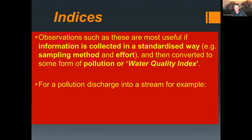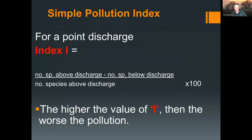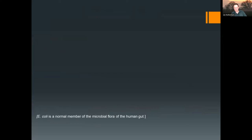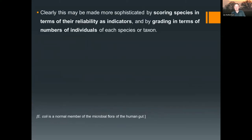For a point discharge of pollution into a stream — such as a sewage input — the index I could be: number of species above the discharge minus the number below, divided by the number of species above, times 100. This gives you an effect assessing the number of species lost, and the higher the value of the index, the worse the pollution. This may be made more sophisticated by scoring species in terms of their reliability as indicators and grading by number of individuals in each taxon, though this becomes more time-consuming and knowledge-demanding.